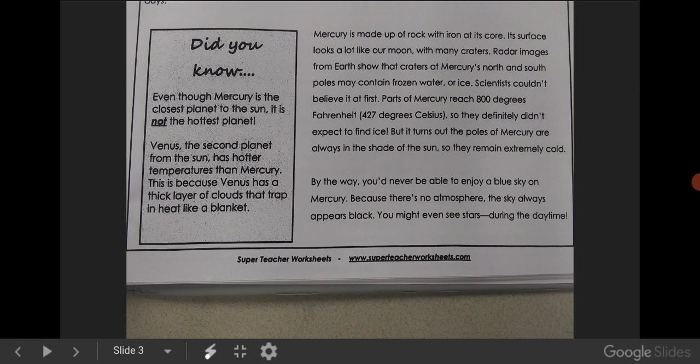Mercury is made up of rock with iron at its core. Its surface looks a lot like our Moon, with many craters. Radar images from Earth show that craters at Mercury's north and south poles may contain frozen water, or ice.